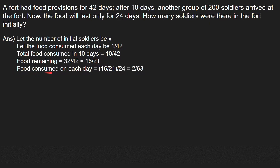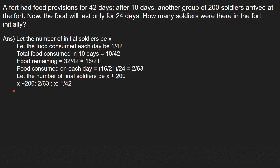Food consumed per day after the 200 soldiers arrived is 16 by 21 divided by 24, because 16 by 21 of food was remaining and it was consumed in 24 days. When we divide this we get 2 by 63. Let the number of final soldiers be x plus 200, since first there were x soldiers and then 200 soldiers arrived.